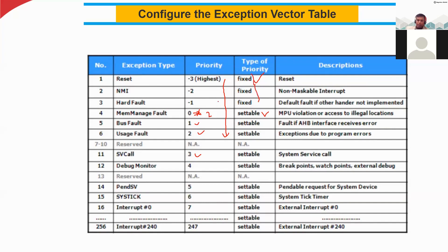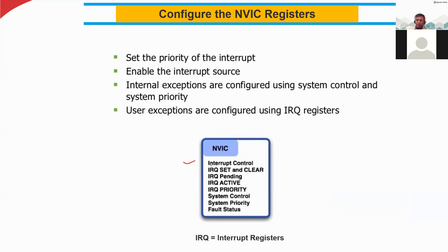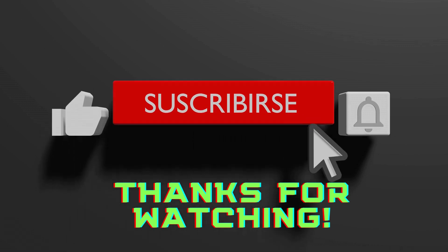Only these three parameters are fixed and cannot be changed; everything else is flexible and settable by the user. There is also a description for each exception type. The NVIC contains interrupt control registers: IRQ set, IRQ clear, IRQ pending, active priority, system control, system priority, fault status, and so on. IRQ stands for interrupt registers.